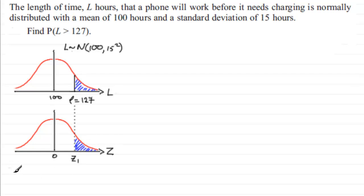Now we should be familiar with the formula that connects Z with any observed value. It is Z equals the observed value L minus the mean μ over the standard deviation σ. So if we put in our values, the observed value is 127 minus the mean, which is 100, and then divide that by σ, which is the standard deviation, 15. And if you work this out, you get 1.8.